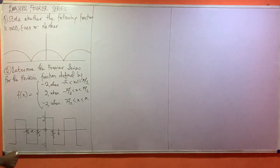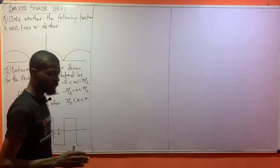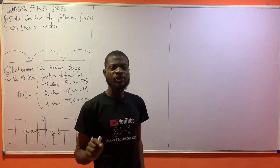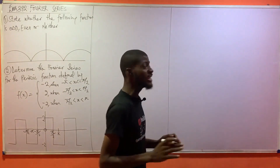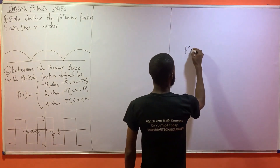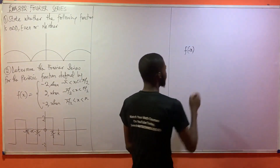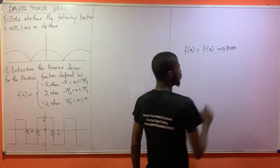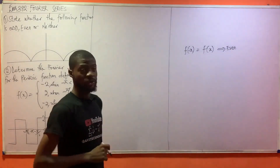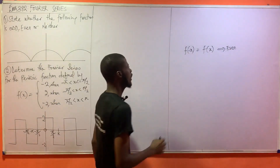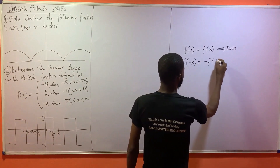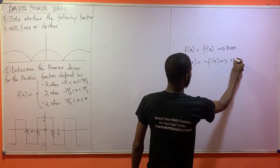The first question says: state whether the function is odd, even, or neither. First of all, algebraically, if the function is even, it means f(-x) = f(x). This is for an even function. If the function is odd, f(-x) = -f(x). This is for an odd function.